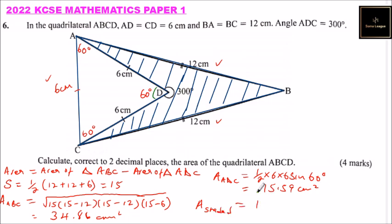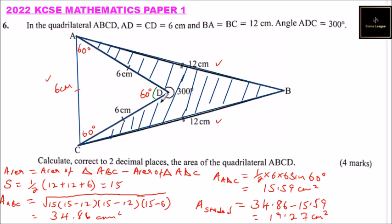The area required is the area of the big triangle, 34.86, minus the area of the other triangle, 15.59, giving 19.27 centimeters squared. That is the area of the quadrilateral ABCD — a four-sided figure. By doing that you should be able to get four marks: one for the area of each triangle, one for the difference, and one for the correct final answer.